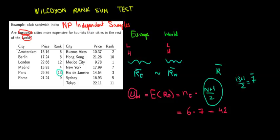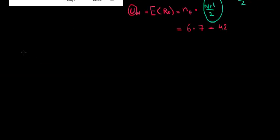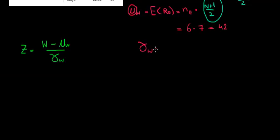We compare our sample rank sum to the population rank sum using a Z distribution. We take the difference: the Wilcoxon sum of ranks from our sample minus the expected value (the population mean), divided by the standard error of the Wilcoxon rank sum. The standard error equals the square root of n₁ × n₂ × (n + 1) / 12.